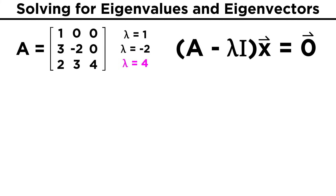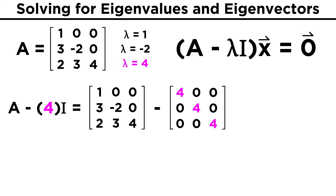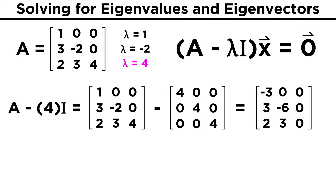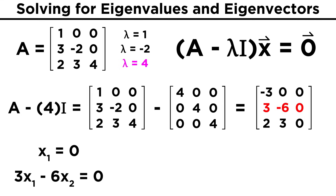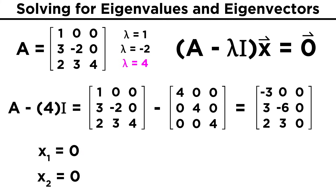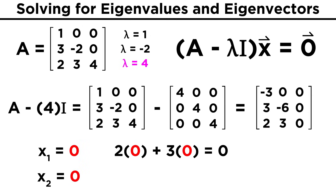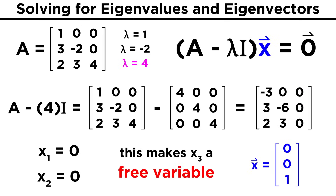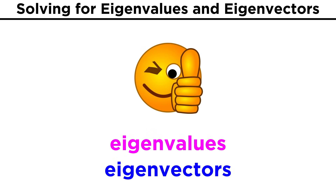Finally, for lambda equals four, the matrix A minus lambda I becomes [-3, 0, 0; 3, -6, 0; 2, 3, 0]. The first row tells us X1 equals zero. The second row gives negative six X2 equals zero, so X2 is also zero. The third row becomes two X1 plus three X2 equals zero, which is satisfied, leaving X3 as a free variable. Choosing X3 equals one, our eigenvectors have the form [0, 0, 1]. Now that we have sufficiently discussed finding eigenvalues and eigenvectors, let's check comprehension.